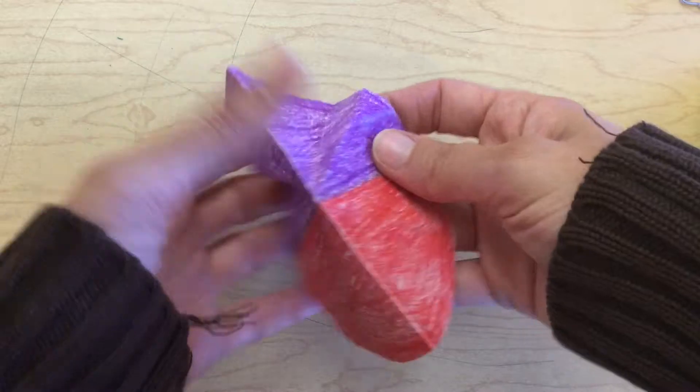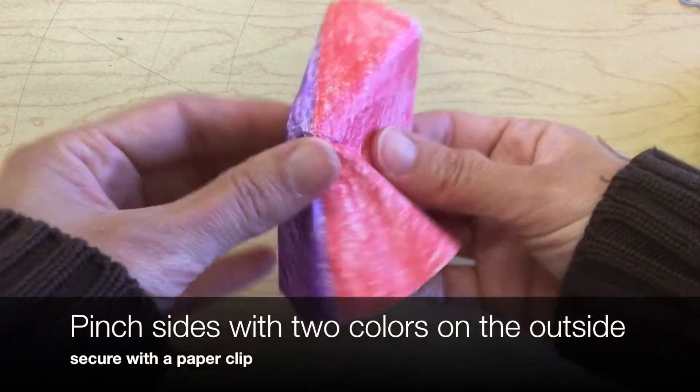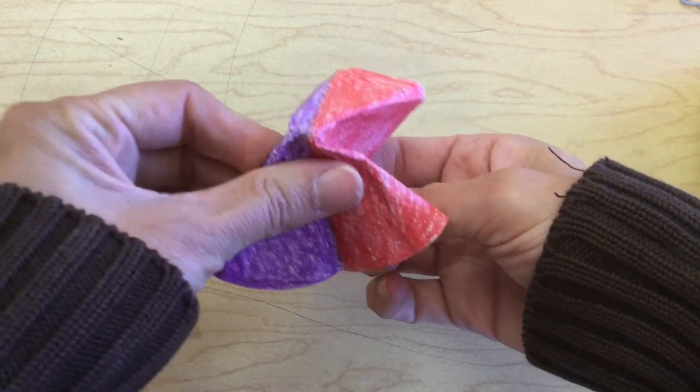Open the circle up and pinch the sides so that the dividing line between the colors goes down the middle and is on the outside.